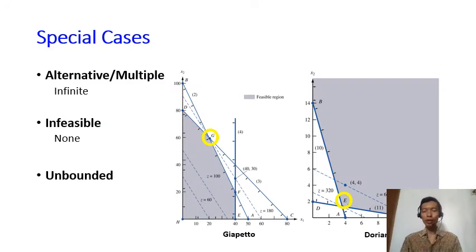So let's recall a little bit that in the Giapetto and Doria and Auto problems, we only have one single optimal solution. And then we have seen the problem where we have infinite number of solutions. We also have seen a problem where we have no solutions at all, which is called the infeasible LP problem.